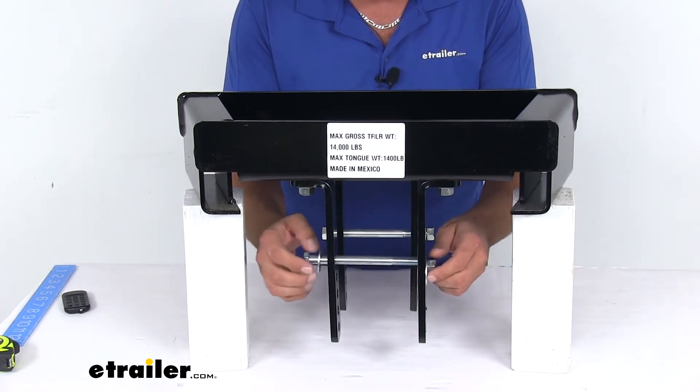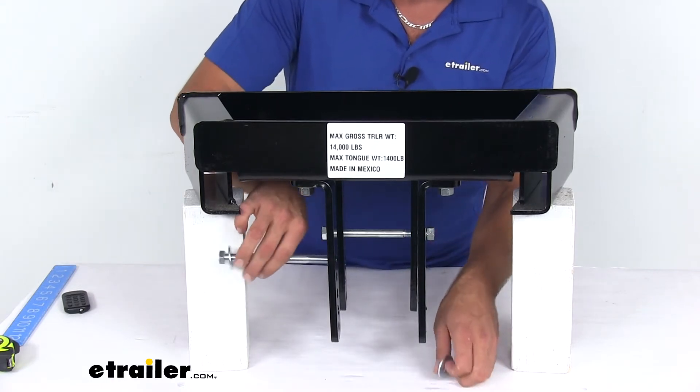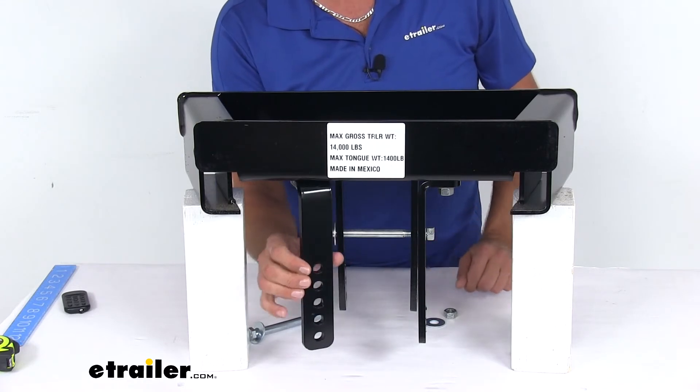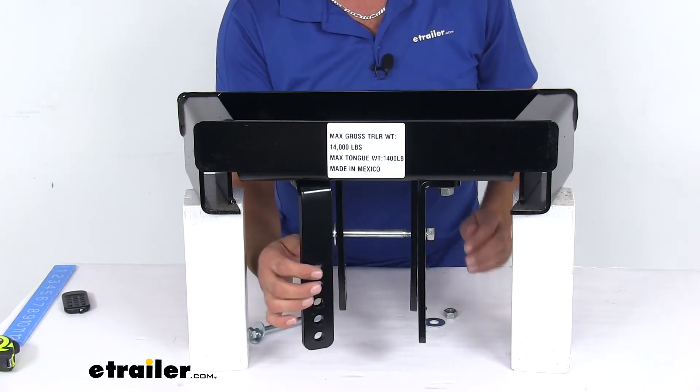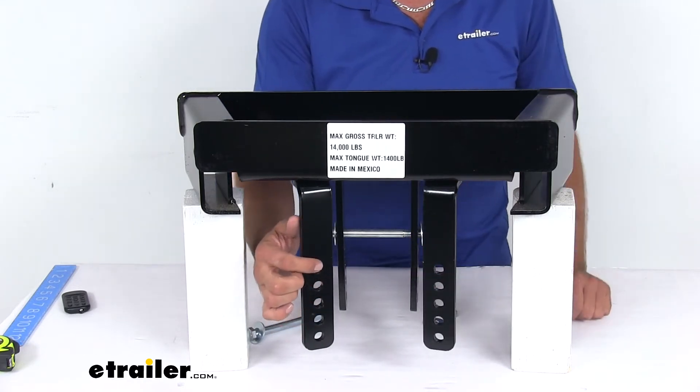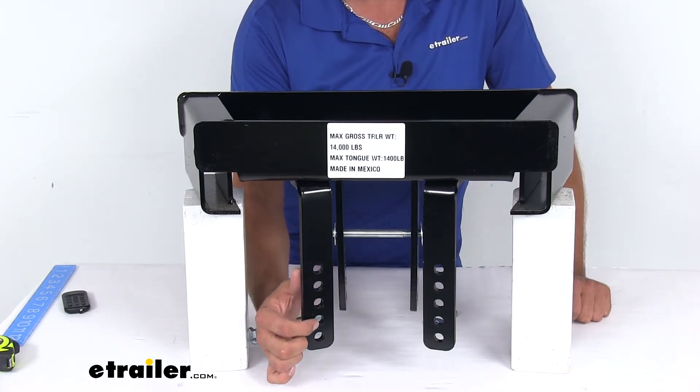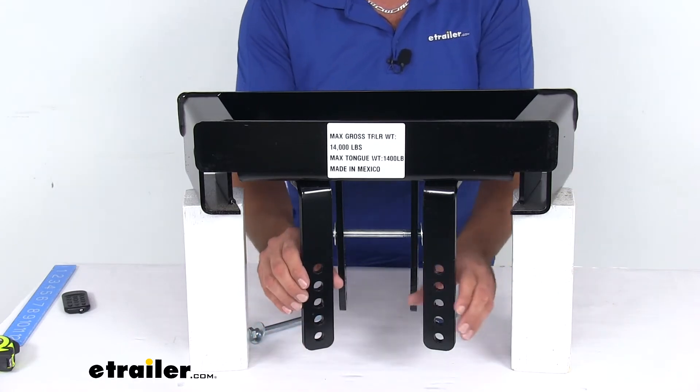Pull this out of here and rotate that. You can see that was in that upper hole right there. Both our brackets are going to have the same set of holes on one inch increments: four and a half, five and a half, six and a half, seven and a half, and eight and a half inch frame depth.